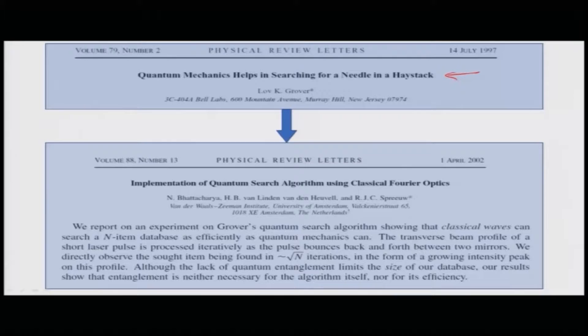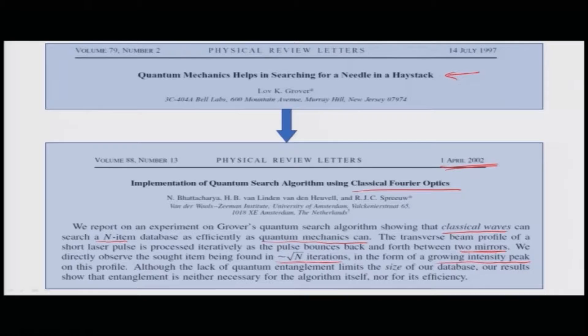In terms of implementation, a group in 2002 used classical Fourier optics with a laser and were able to do an experiment of the Grover's quantum search algorithm, showing that classical waves can search an n-item database as efficiently as quantum mechanics. The transverse beam profile of a short laser pulse is processed iteratively as the pulse bounces back and forth between the two mirrors of the laser. They directly observed the searched item and found it in roughly √n iterations in the form of a growing intensity peak in the beam profile, precisely as Grover had predicted in 1997.